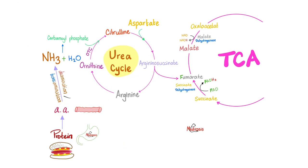Here's the lovely urea cycle. Don't forget that argininosuccinate is going to feed into fumarate, which feeds into the TCA cycle. The urea cycle is so important because it converts the very toxic ammonia into the less toxic urea, and then it will give that urea to the kidney, which will get rid of it. Urea leaves at the step between arginine and ornithine, going to the bloodstream, reaching the kidney, and the kidney will excrete the urea. The site of the urea cycle in your body is the liver's hepatocytes, just like de novo cholesterol synthesis.